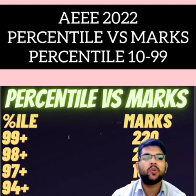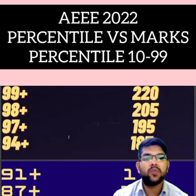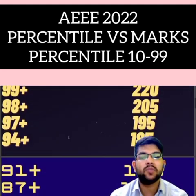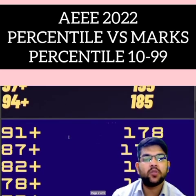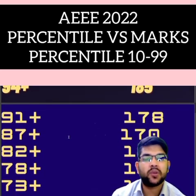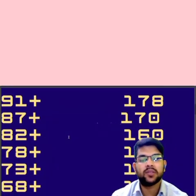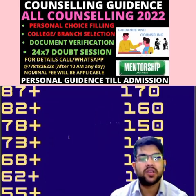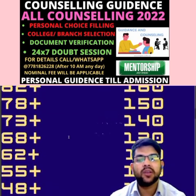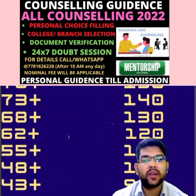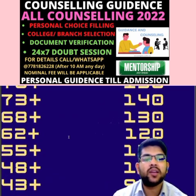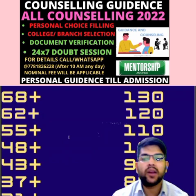For 94 percentile, your marks would be 185 or more. For 91 plus, 178 marks will be required. For 87 plus, 170 marks. For 82 percentile, 160 marks. For 78, 150 plus. For 73, 140 plus marks will be required. For 68, 130 plus. For 62, 120 plus. For 55, 110 plus. For 48 plus percentile, 100 plus marks will be required.